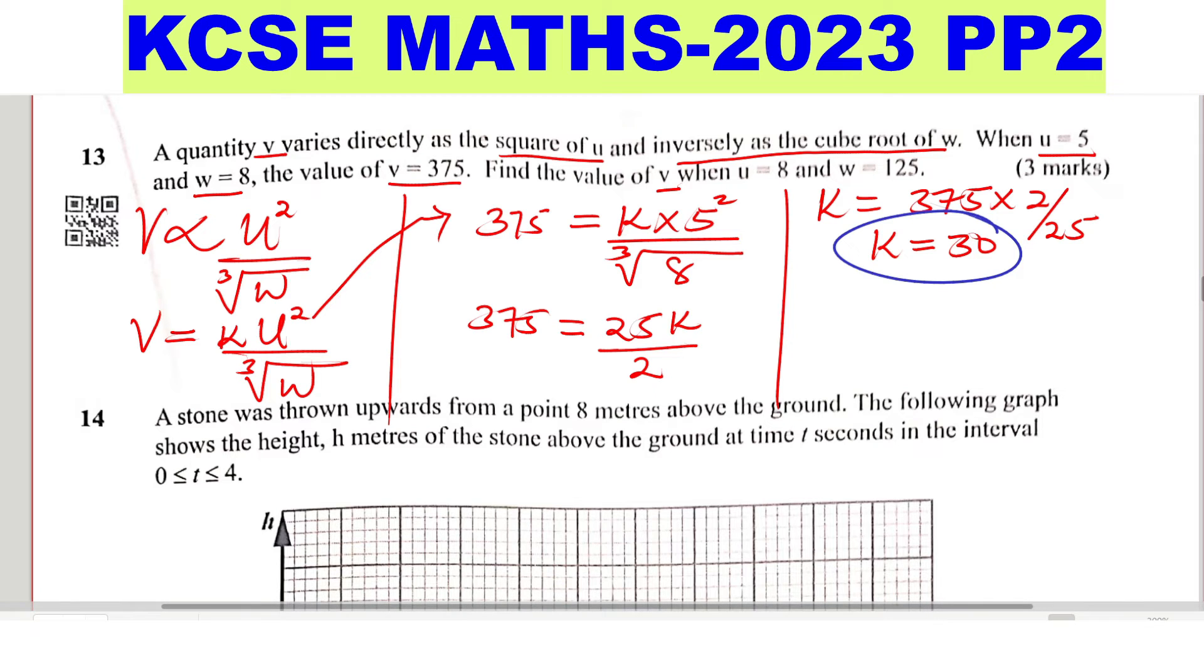Now you can write the whole formula. V equals K, which is 30, U squared, divided by the cube root of W. So the question is, find V when U equals 8 and W equals 125.